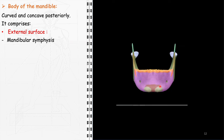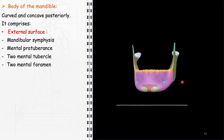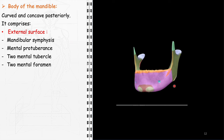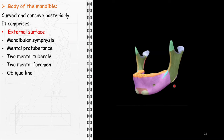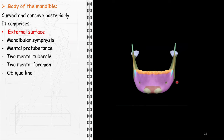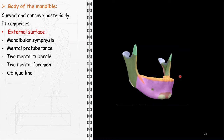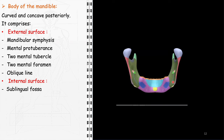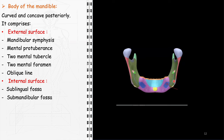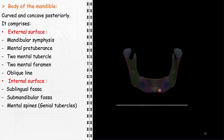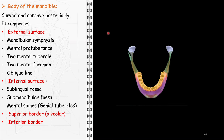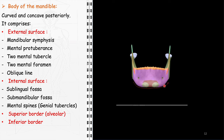The mental protuberance, the point of the chin, is a prominent feature contributing to facial aesthetics. Nearby are the mental tubercles, providing the chin with its rounded shape. The mental foramina, typically positioned below the second premolar tooth, allow for the passage of the mental nerves and blood vessels. The oblique line extends from the mental tubercles to the anterior border of the ramus, marking the attachment for several facial muscles, including the depressor labii inferioris and the depressor anguli oris. The internal surface features the sublingual fossa, located above the mylohyoid line, accommodating the sublingual gland; the submandibular fossa, below the mylohyoid line, housing the submandibular gland; and the mental spines, also known as genial tubercles, providing attachment points for the genioglossus and geniohyoid muscles. The body of the mandible has a superior border, known as the alveolar part, containing the dental alveoli for the lower teeth, and an inferior border providing structural strength to the lower jaw.